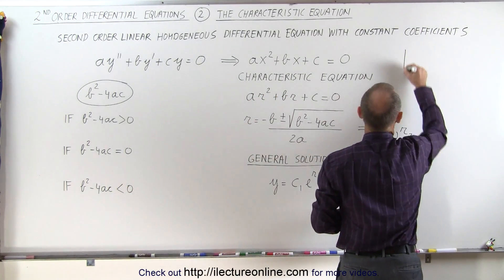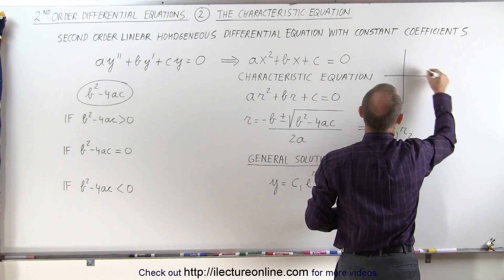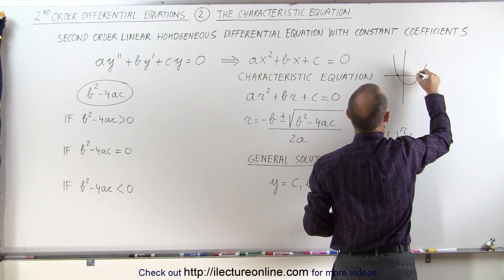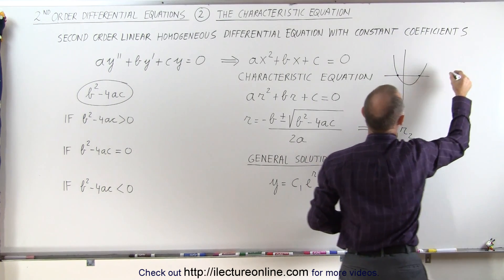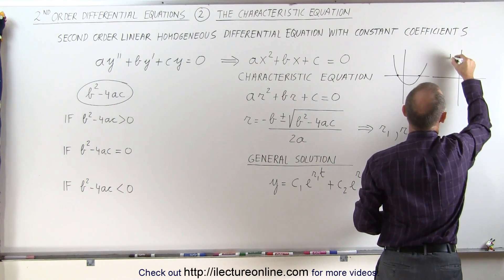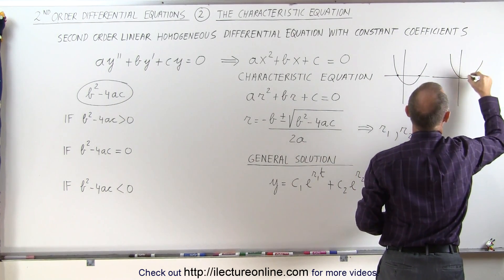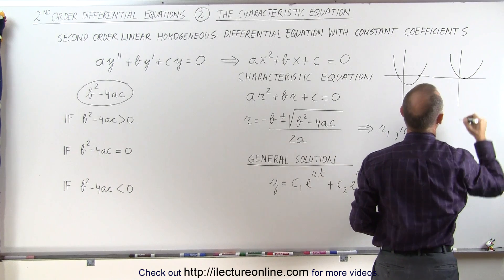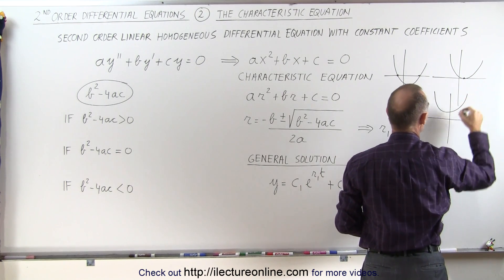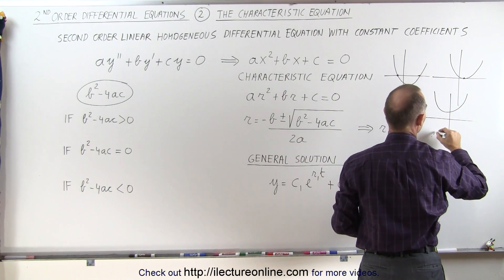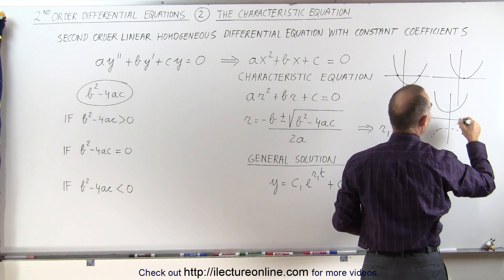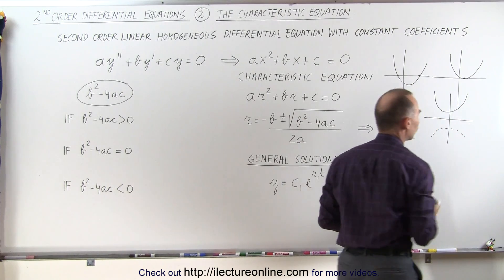In other words, we may have something where there are two roots to the equation, we may have something where there is a single double root, or we may have something where there are no roots — basically what we call an imaginary root.